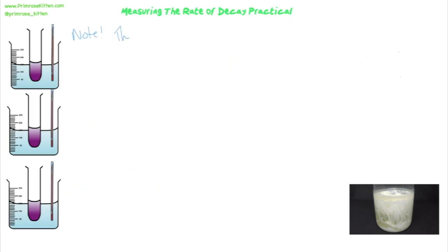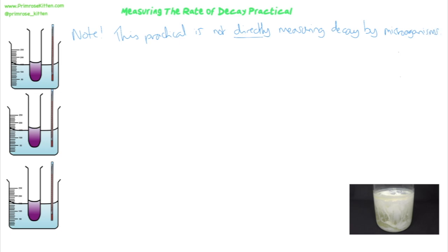The idea here is that we're measuring the rate of decay, but we're not actually directly measuring decay by microorganisms in this practical. It's just a model, because the microorganisms that carry out decay normally would produce enzymes which would then digest the lipids in the milk and produce the fatty acids. We're just directly adding the enzyme lipase. The explanations are the same as any enzyme reaction practical, because we're cutting out the step of the microorganisms and using the enzymes they would normally release.